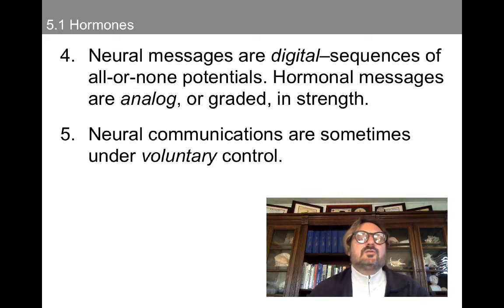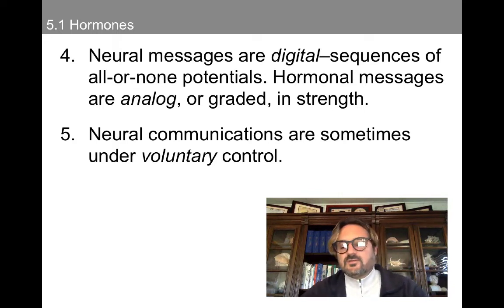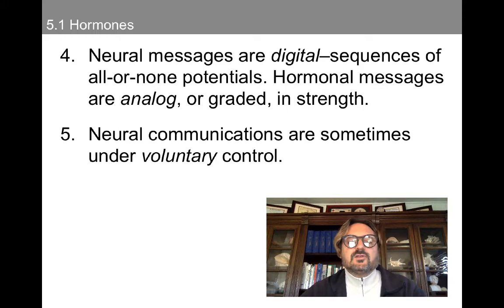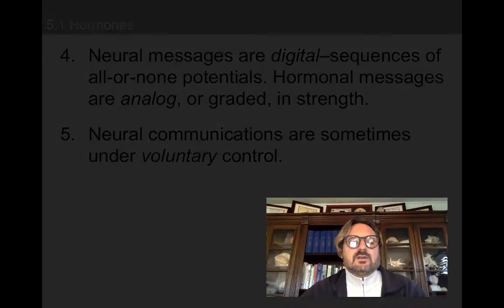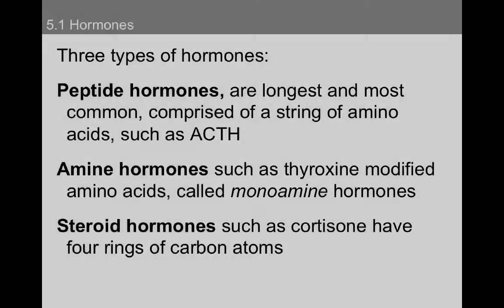Neural messages are digital sequences of all-or-none potentials, whereas hormonal messages are analog or graded in strength — kind of like the graded potential we talked about versus the action potential. And finally, neural communications are sometimes under voluntary control, whereas endocrine communication is less voluntary.